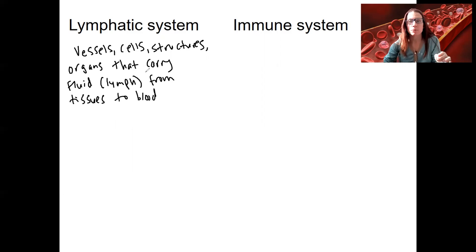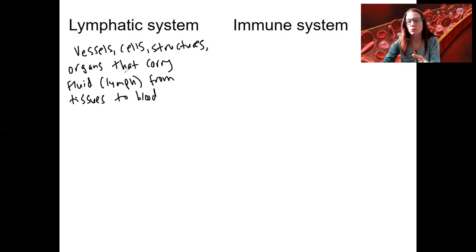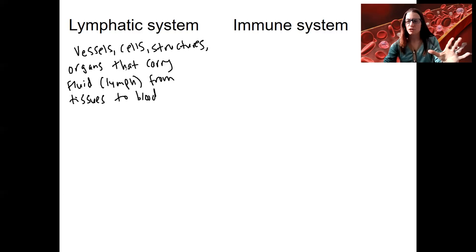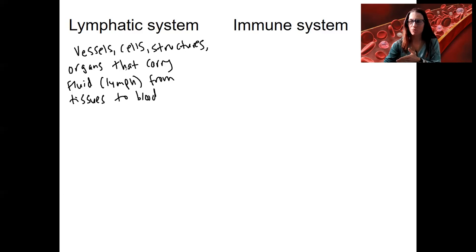We will see the importance of the lymphatic system in terms of fluid regulation after we talk about capillary filtration at the tissues. It's 20 liters a day of your blood that is filtered out into your tissues, and the lymphatic system is what gets that fluid back into your bloodstream. This is super important for maintaining blood pressure, fluid volume, and preventing edema — swelling in your tissues.